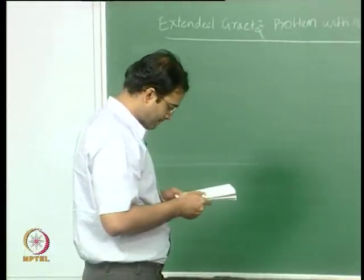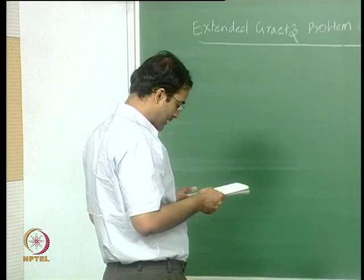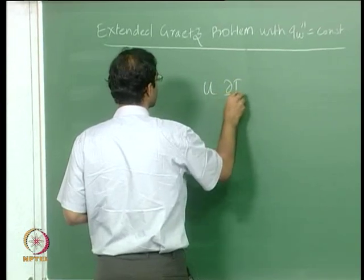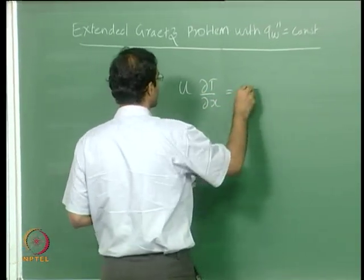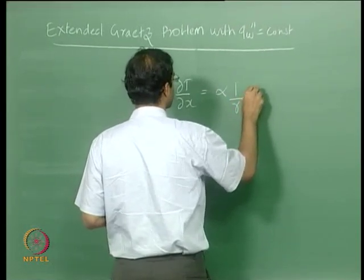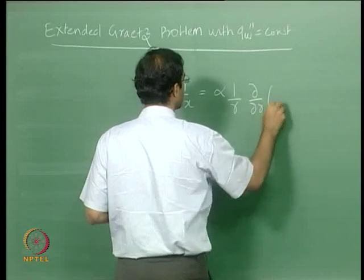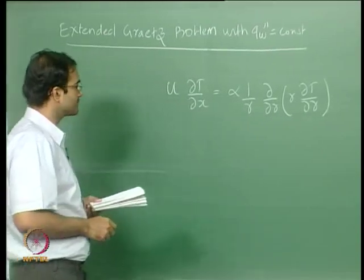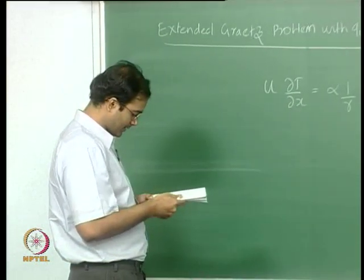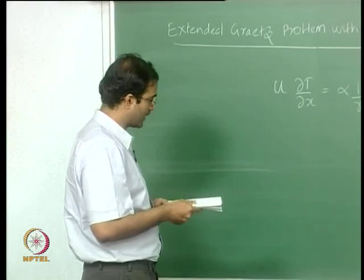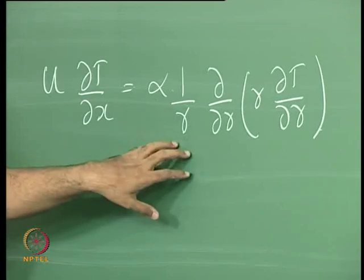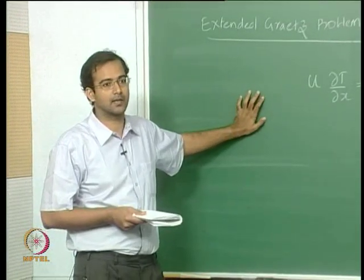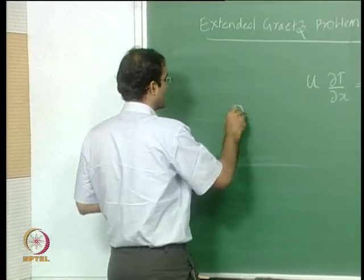Taking the case of a plug flow velocity profile, we start with the energy equation: U DT/DX = α × (1/R) × D/DR × (R DT/DR). This is the basic energy equation. We will not try to non-dimensionalize the temperature here because we have a constant wall flux condition.